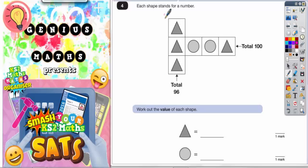It's a bit like a puzzle. If you look at the triangles, you can see that we've got three triangles equal to a total of 96. So if we share 96 equally across the three triangles, we only want what one triangle is worth.